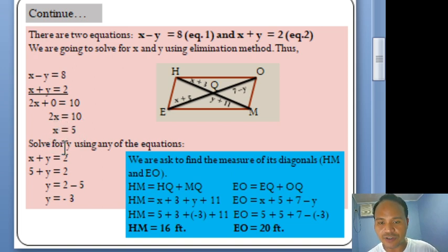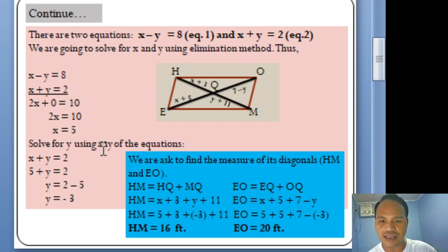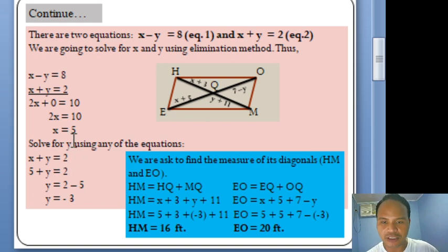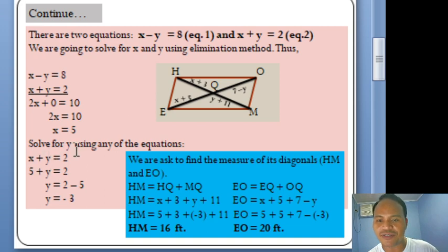Now solve for Y using either equation. Using Equation 2, X + Y = 2, we substitute X = 5 to get 5 + Y = 2. Transposing 5 to the right gives Y = 2 − 5, so Y = −3.